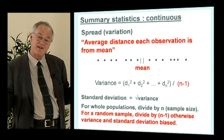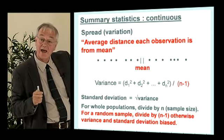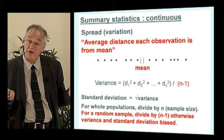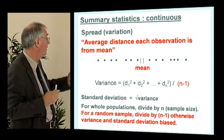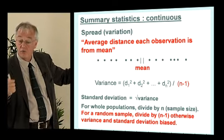One final issue: dividing the sum of squares by n is fine if you've studied an entire population. If you've only studied a random sample — as is likely — that formula will give a biased estimate that's slightly too small. So if you're using a random sample, you have to divide the variance by n minus 1 — the sample size minus 1. This is a mathematical requirement to ensure you don't underestimate variance and standard deviation from a sample.